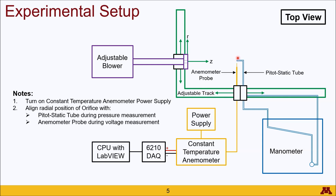The pitot-static tube connects to the manometer, providing both a stagnation pressure as well as a static pressure, which will result in a differential pressure reading. The anemometer probe is controlled using the constant temperature anemometer, which has a power supply attached to it, and the output of this will go into the DAC which will then be read by the LabVIEW program.